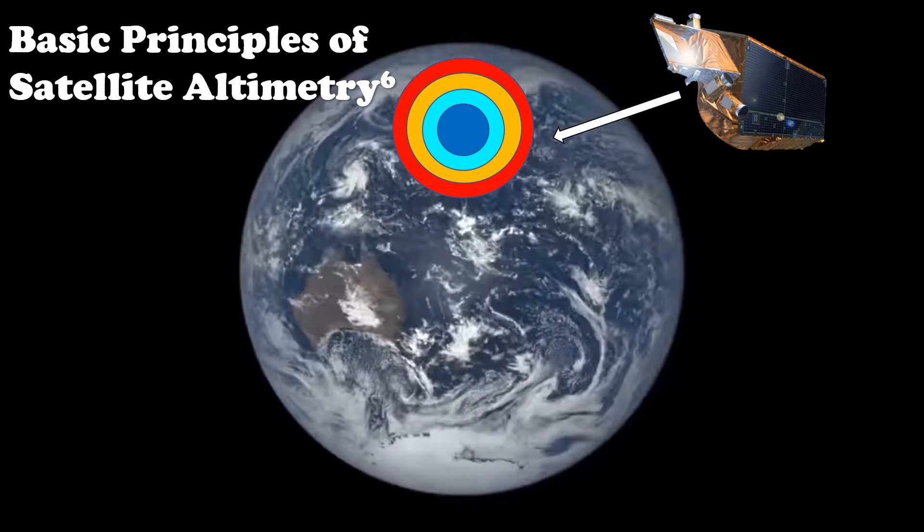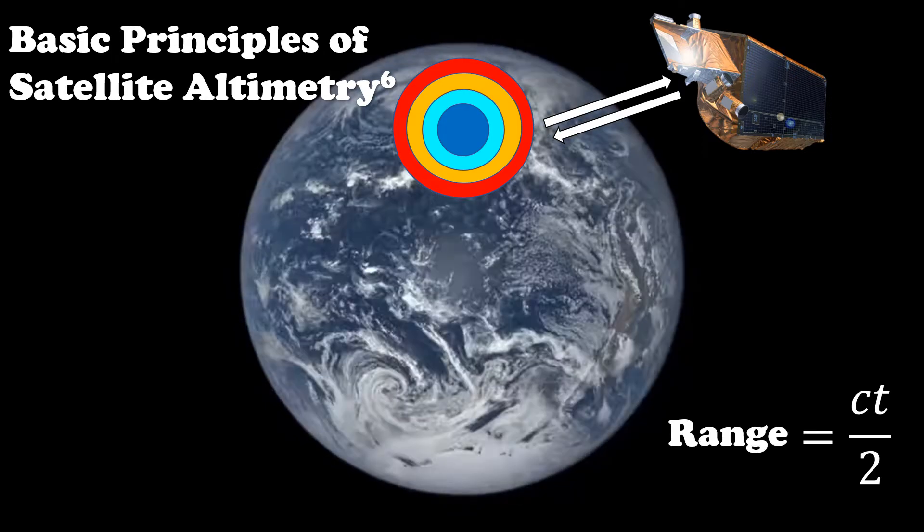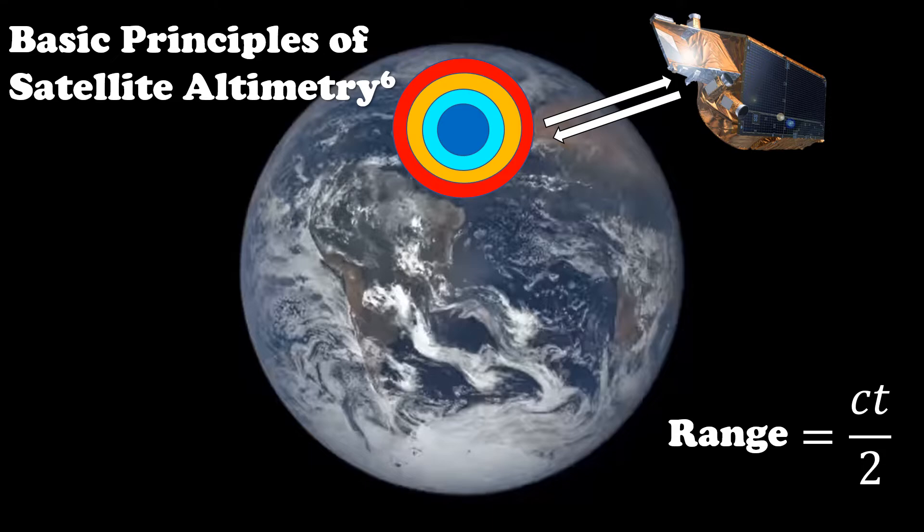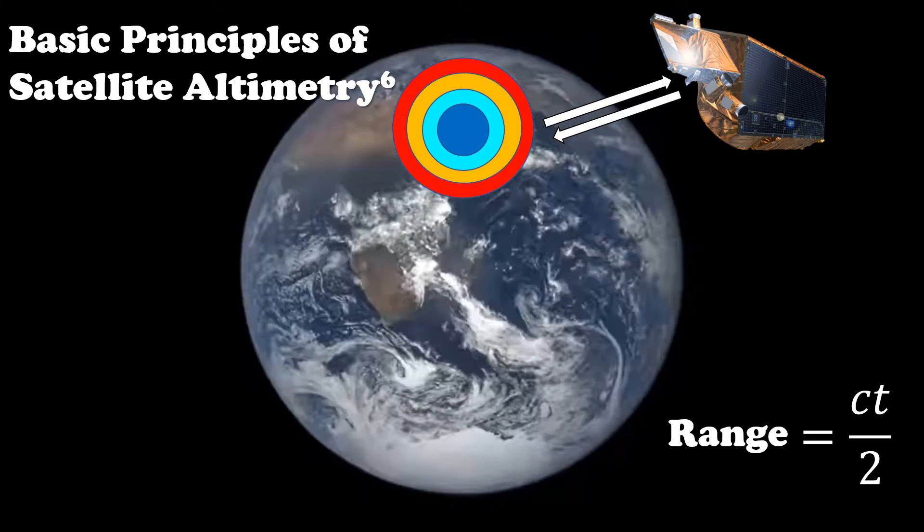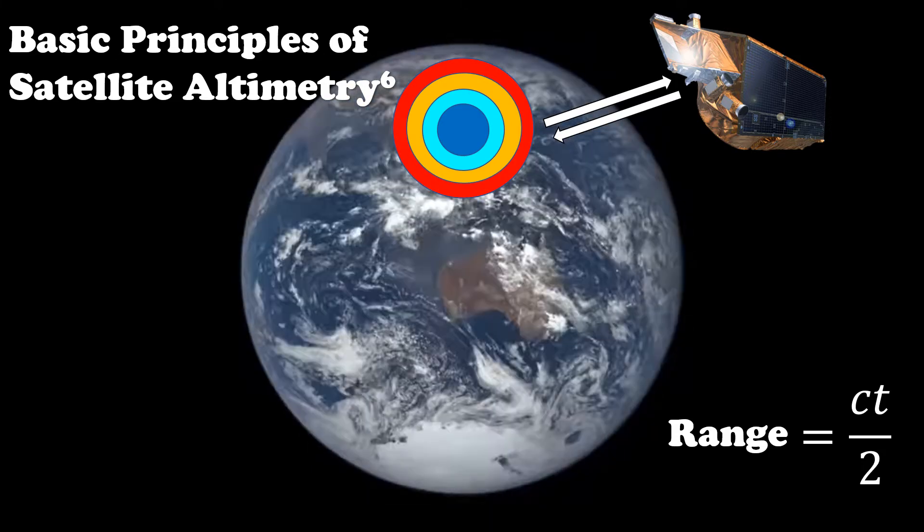The time it takes for these to be returned can be converted into a height or distance called the range. This is equal to speed multiplied by time divided by two, given its two-way travel time.